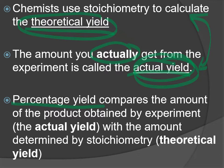It's possible you could get a higher than 100% theoretical yield if some other error is happening — for example, if what you think is your product actually has other stuff in it, like if it's wet, then its mass might be higher and you'd imagine your actual yield is higher, but it's not the actual product. If you have zero errors, your actual yield should be less than the theoretical yield.